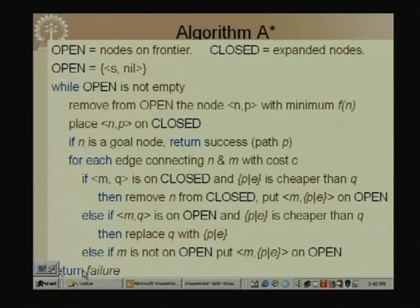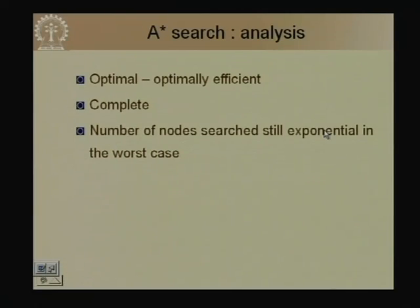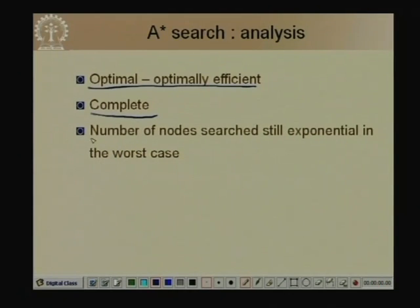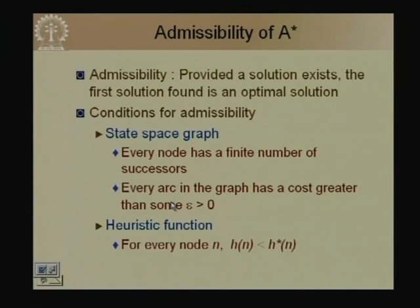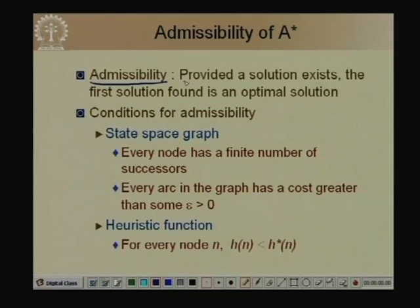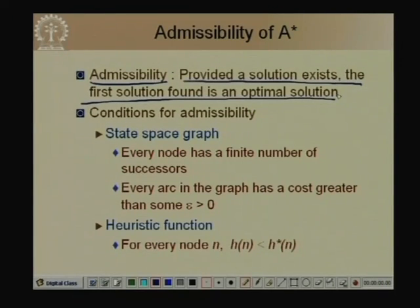A* is optimally efficient: it gives the optimum solution and is the most efficient optimal algorithm. A* is complete. However, the number of nodes searched is still exponential in the worst case unless the heuristic is extremely accurate (logarithmically accurate). A* is admissible: provided a solution exists, the first solution found is an optimum solution.